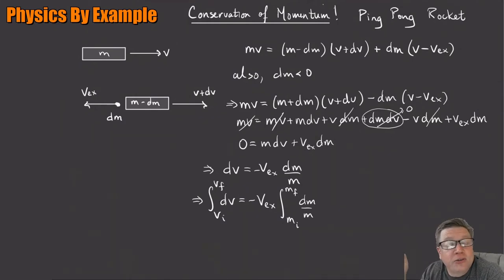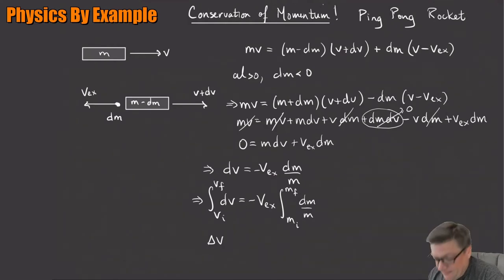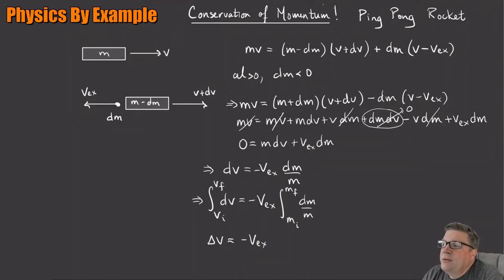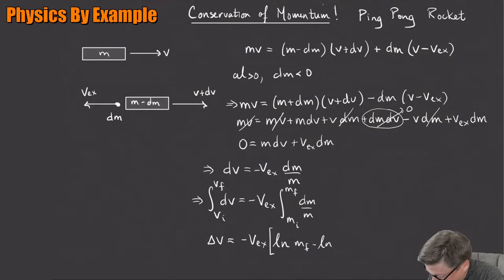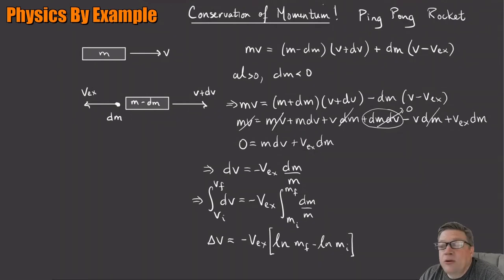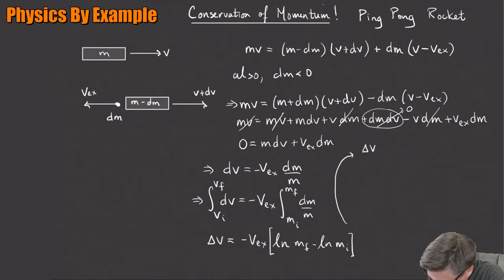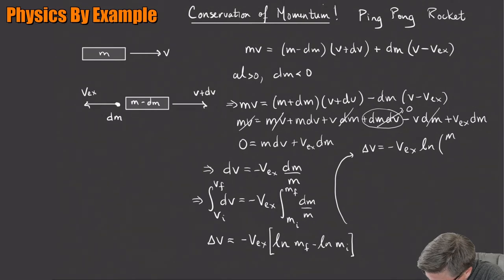The integral of dv is easy — that's just v_final minus v_initial, which is our delta-v, the speed change of the rocket. On the right side, the integral of dm/m is the natural log of m, so evaluating the limits gives ln(m_final) minus ln(m_initial). The exhaust speed v_exhaust is a constant so it comes outside the integral with a minus sign.